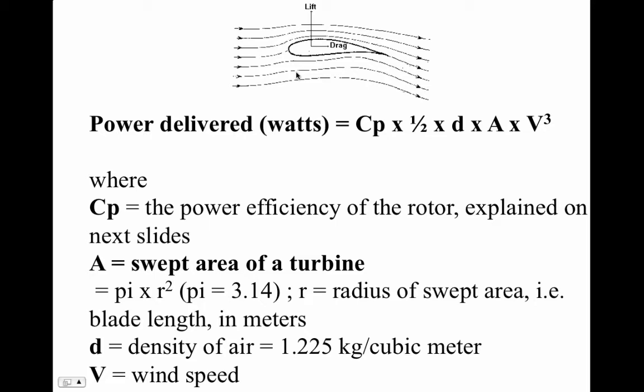The way a wind turbine blade works is that it's shaped like an airplane wing and it's flying through the air. The air takes a longer path over the top and a shorter path under the bottom, and since it all has to meet up back at the trailing edge, the air taking the longer path has to go faster. This creates a low pressure area that actually pulls the wing forward — and that's how modern airfoil wind turbines work.